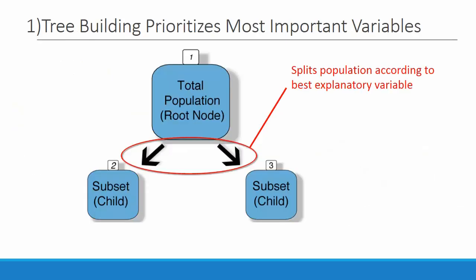CART analysis begins with a process known as tree building. To begin constructing the tree, we start with a root node that contains the entire population of the dataset. Within this population, the CART software checks all of the possible splitting variables using a Gini or twoing splitting function. These functions then identify the best splitting variable and partition the population into two child nodes.